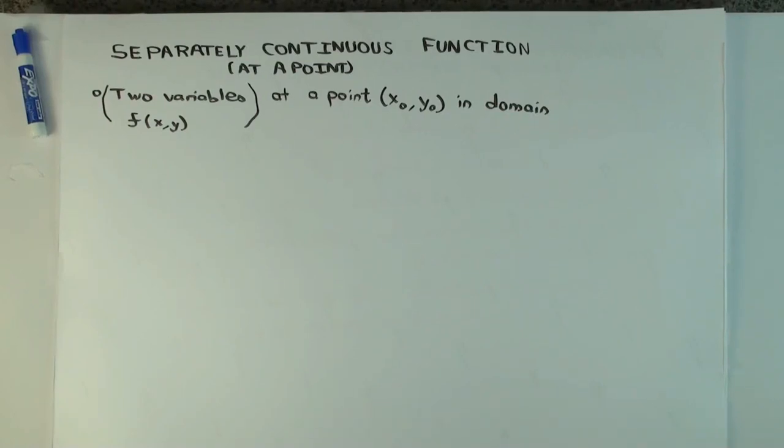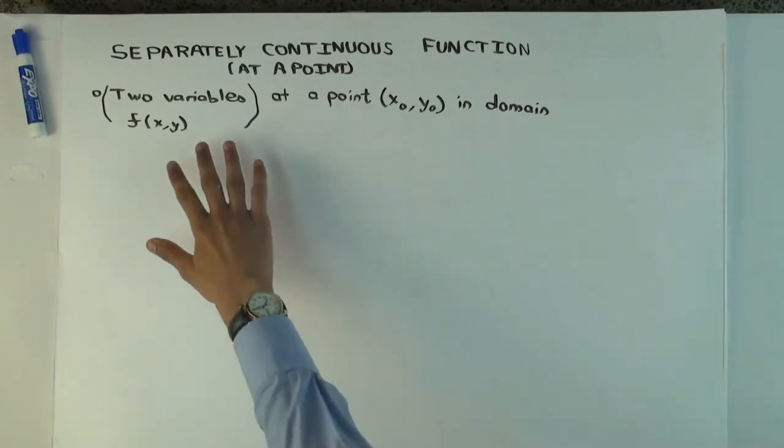So in this talk, I'm going to consider the definition of separately continuous function at a point for a function of two variables.